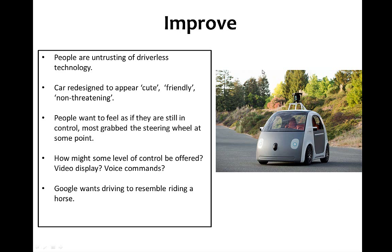In the second version of the car, we still have a lot of the same technology — the big sensor on the roof — but the car looks considerably different, much more approachable. The idea is that people want to feel as if they're still in control, so most people grab the steering wheel at some point during their experience with the driverless vehicle. One of the contingencies to be planned is how some level of control might be offered — perhaps video displays or voice commands that allow a driver to interrupt the automated system controlling the vehicle.